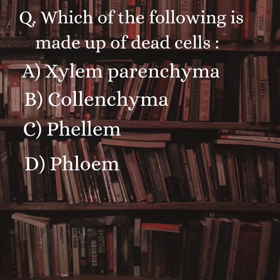Since xylem parenchyma, colenchyma, and phloem are living cells, and phelum is the word used for cork — and as we know, cork is made up of dead cells — the answer to the question is c) phelum, or cork.